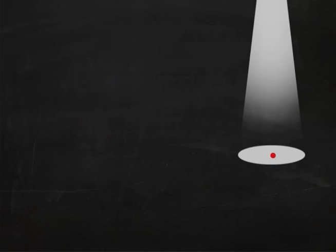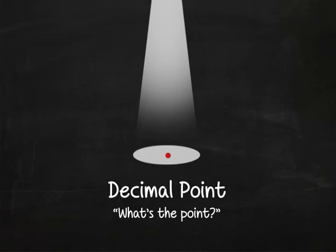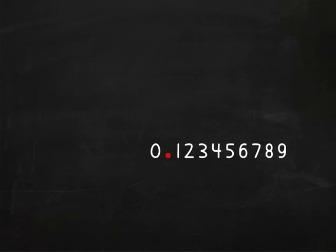What do we have here? Yes, right there. This is a decimal point. What's the point, you might ask? Well, the numbers to the right of the decimal point are smaller than one.